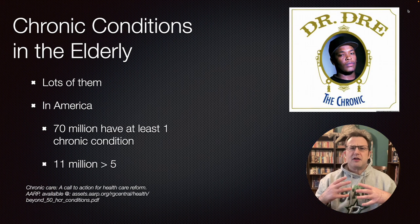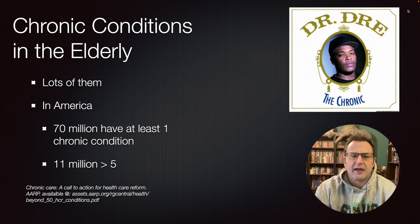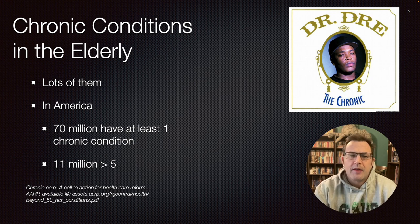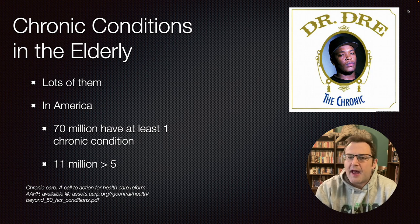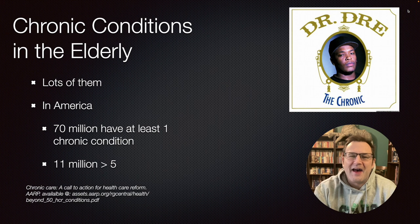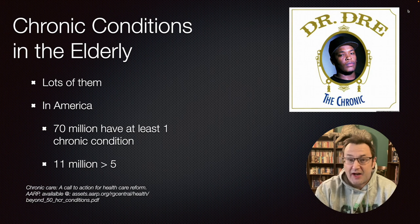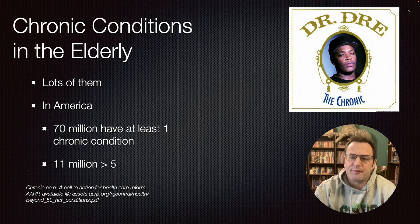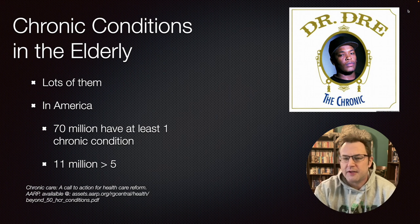We talked earlier about comorbidities and what the number of comorbidities in the United States looks like. In America, there are 70 million people that have at least one chronic condition, and there are 11 million that have more than five. The elderly population is about 15% of the total U.S. population, but they consume over a third of the healthcare in the U.S. I would be comfortable extrapolating that quite a few of that 11 million represents the elderly.